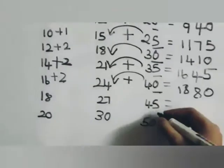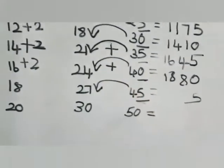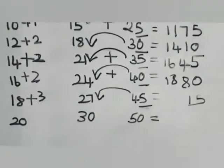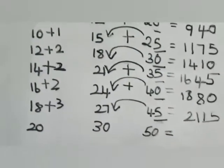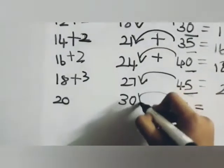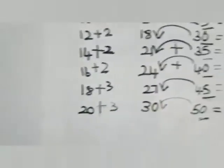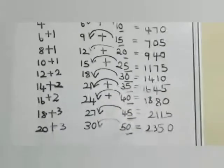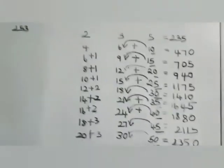Write five as such here, add four to twenty-seven — will be thirty-one, so add three here. So 235 multiplied by nine would be 2115. Next write zero here, add five to thirty — will be thirty-five, add three here, so it will be 2350. And 235 multiplied by ten will be 2350.